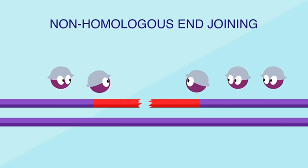Non-homologous end joining, on the other hand, doesn't rely on a template. Instead, a series of proteins trims off a few nucleotides and then fuses the broken ends back together. This process isn't as accurate — it can cause genes to get mixed up or moved around. But it's useful when sister DNA isn't available.